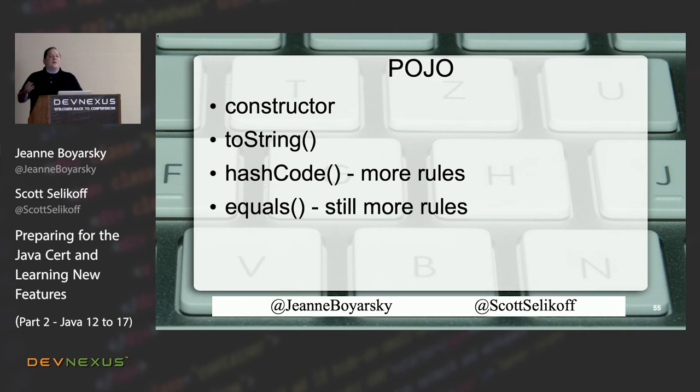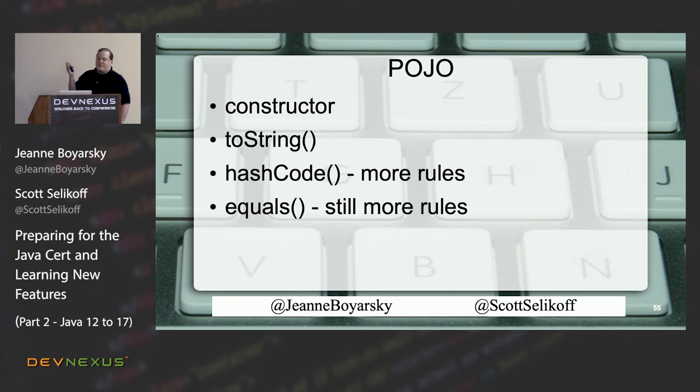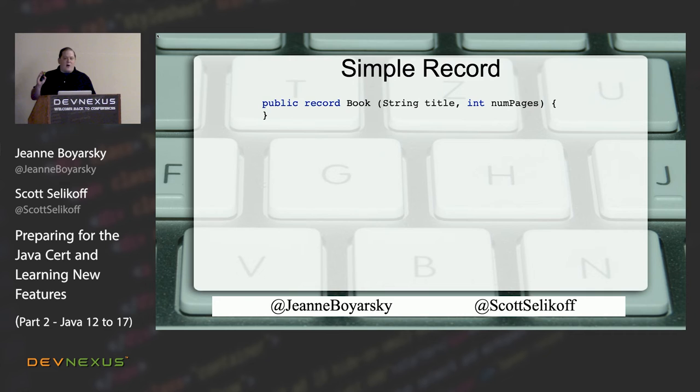You've probably also worked with POJOs or Java Beans — a list of fields with getters and setters (accessors and mutators). You also need to write toString, hashCode, and equals for them to be meaningful. The default Object implementations won't give you equality based on field values. Enter records, which solve all of this.